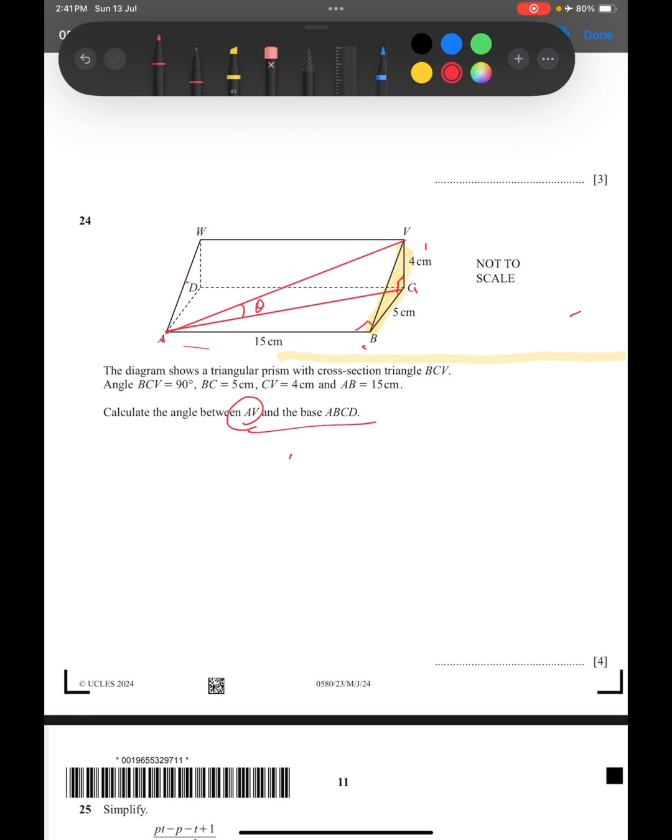So we can find AC. AC will be the square root of 15 squared plus 5 squared. Using the calculator, under root of 15 squared plus 5 squared.